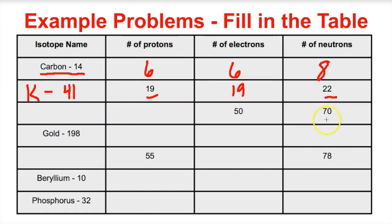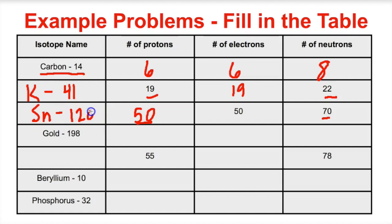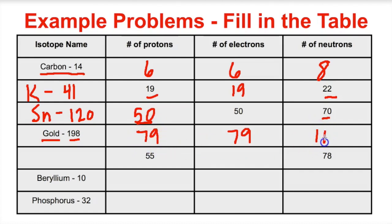What about this one — it has 50 electrons. In any stable atom, there's going to be the same number of electrons as protons, so we look up atomic number 50 on the periodic table, which is tin — symbol Sn. We take the number of neutrons plus the number of protons to get the mass, so tin-120 is the isotope we're talking about here. What about gold-198? Gold is number 79 on the periodic table, so it has 79 protons and 79 electrons. We take 198 minus 79 and end up with 119 neutrons.